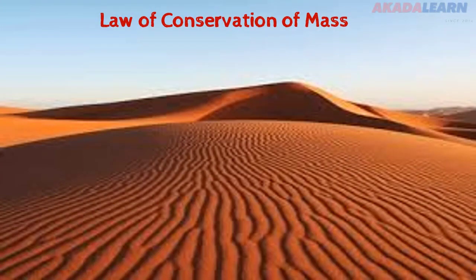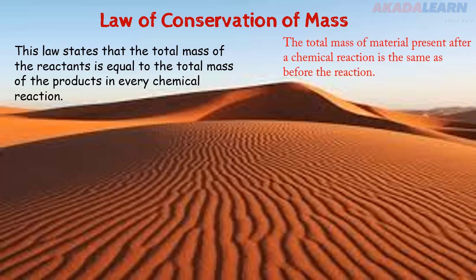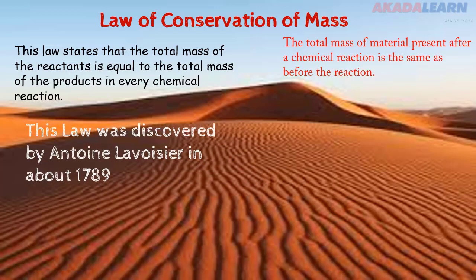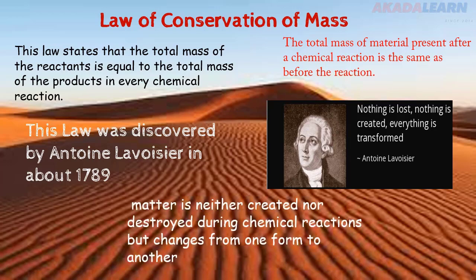The law of conservation of mass states that the total mass of the reactants is equal to the total mass of the products in every chemical reaction. What this means is that the total mass of material present after the reaction should be equal to the one before the reaction. This law was discovered by Antoine Lavoisier in about 1789. His quote: nothing is lost, nothing is created, everything is transformed. Matter is neither created nor destroyed during chemical reactions but changes from one form to another.